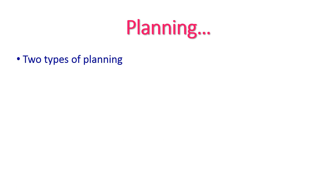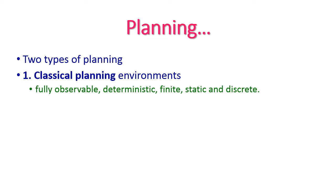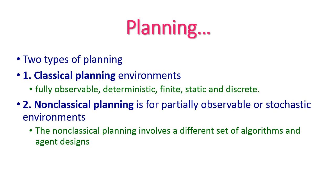There are two types of planning. The first one is classical planning — a traditional planning system where a sequence of actions is performed on the environment by satisfying preconditions to achieve a decided goal. The environments for classical planning are fully observable, deterministic, finite, static, and discrete. The second one is non-classical planning, which is for partially observable or stochastic environments and involves a different set of algorithms and agent designs.